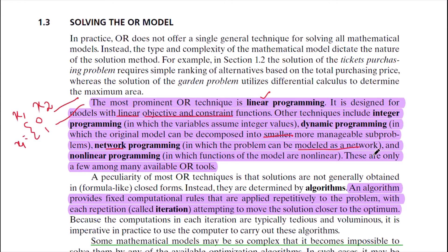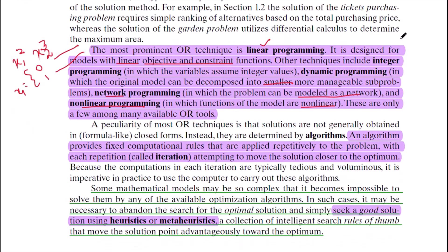Then network programming, in which the OR model can be depicted as a network, and then nonlinear programming, in which the functions are nonlinear, means any power can be there, to the power 2, any polynomial degree or 3, but more than 1.